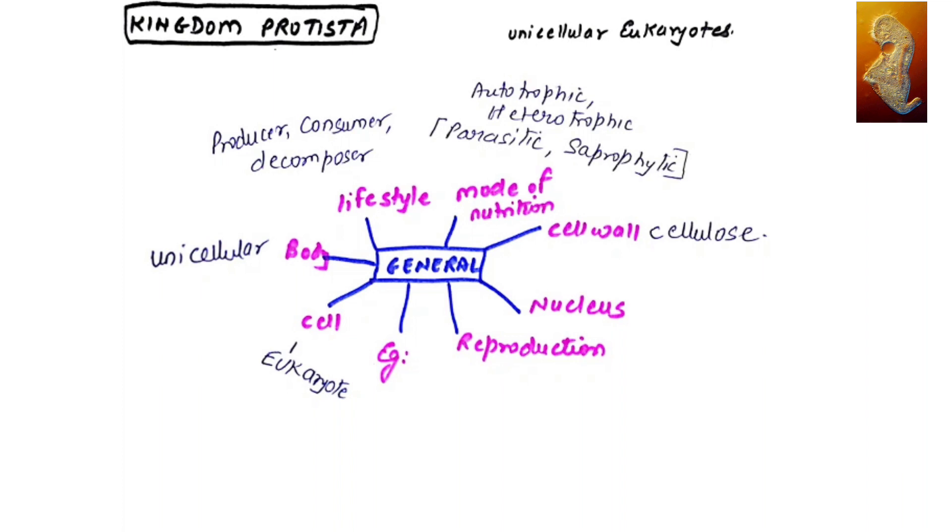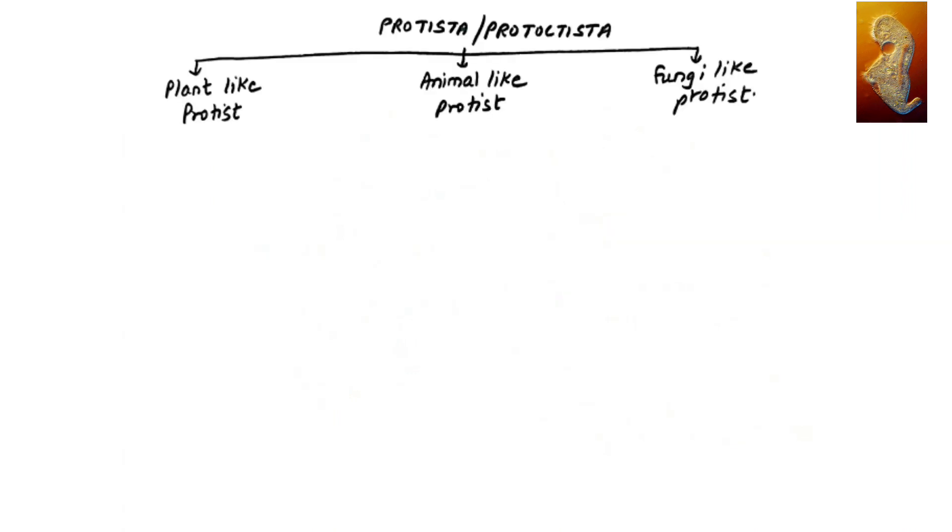The nucleus of Protista is present along with all cell organelles like mitochondria, golgi body, and chloroplast. Reproduction in Protista is both sexual and asexual. Sexual reproduction takes place by fusion of gametes, and asexual reproduction takes place by spore formation or binary fission.